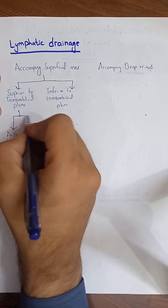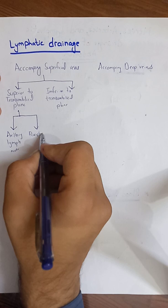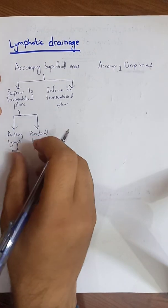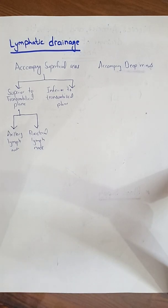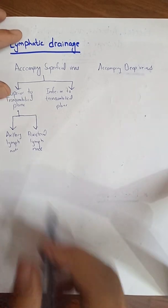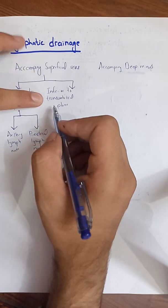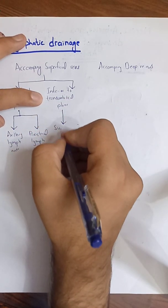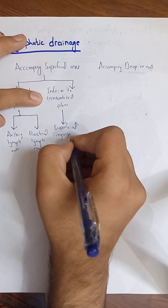Some lymph from above the transumbilical plane also drains into the parasternal lymph nodes. From there the lymph moves to the subclavian lymphatic trunk and ultimately into the right venous angle, as discussed in the lymphatic drainage of the upper limb. Lymph vessels inferior to the transumbilical plane drain into the superficial inguinal lymph nodes.